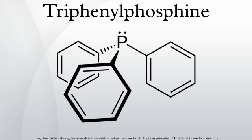In the Mitsunobu reaction, a mixture of PPh3 and isopropyl azodicarboxylate converts an alcohol and a carboxylic acid to an ester. The DIAD is reduced as it serves as the hydrogen acceptor, and the PPh3 is oxidized to OPPh3. In the Appel reaction, PPh3 and CX4 are used to convert alcohols to alkyl halides, forming OPPh3 as a byproduct.